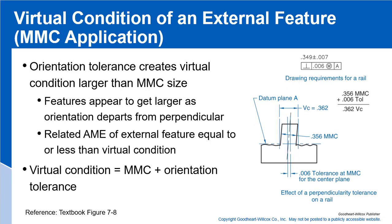For an external feature, the orientation tolerance creates a virtual condition larger than the MMC size. In this example, we have 349 plus or minus 7 with a perpendicularity tolerance of 6 thousandths applied at MMC. The MMC is 356, which is the largest dimension of the external feature. Since it's an external feature, we add the orientation tolerance to get our virtual condition.